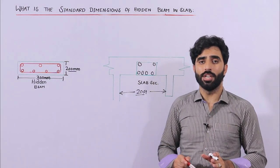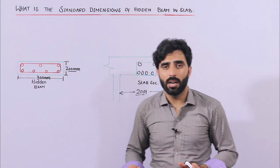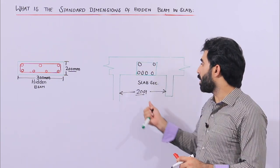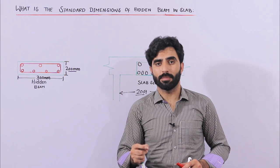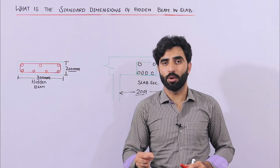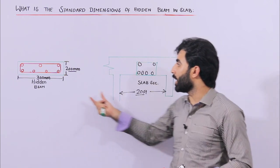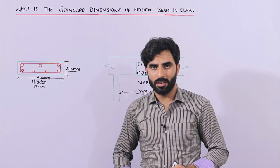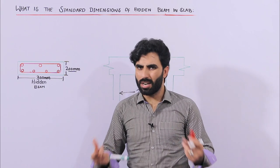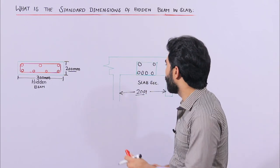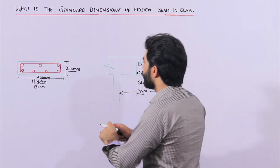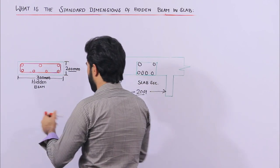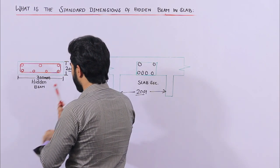When we provide the hidden beam, there is a positive bending moment which is maximum in that region. To control this positive bending moment, we provide the hidden beam to transfer and distribute the load of the structure. This is very important to understand.